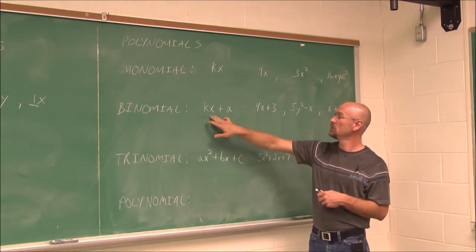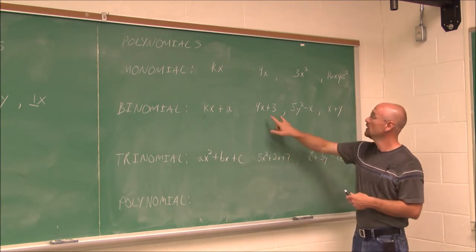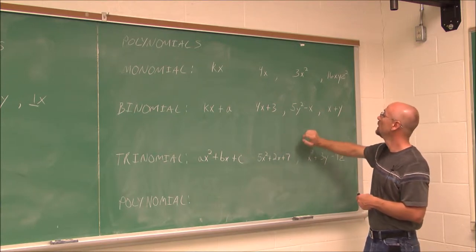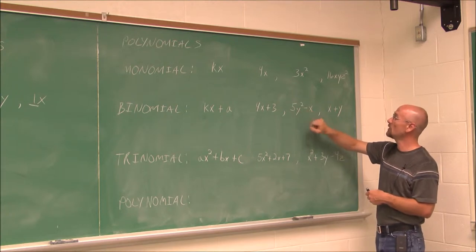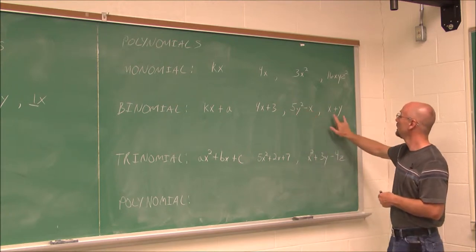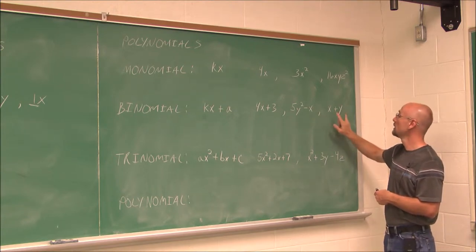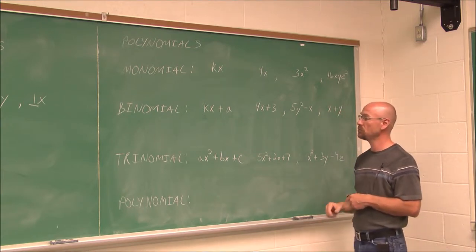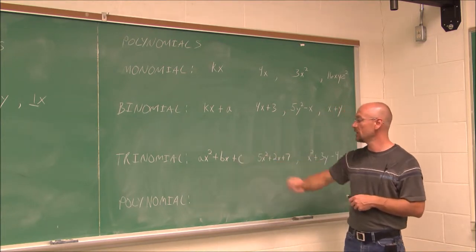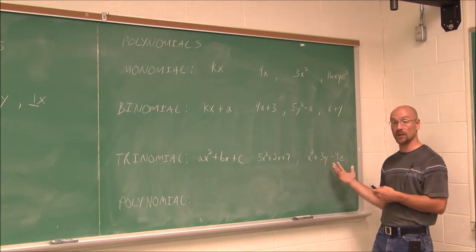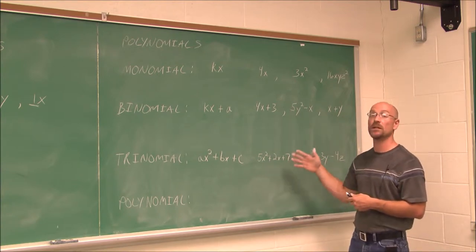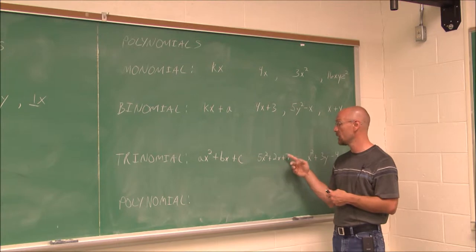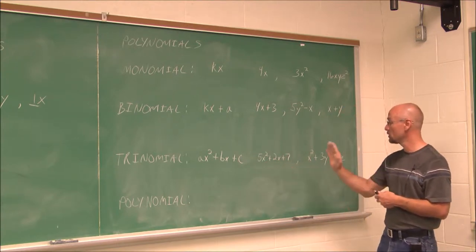For binomials, we have two terms separated by addition or subtraction. For example, 4x plus 3 — the term 4x and the constant 3. Also 5y squared minus x — two terms, a binomial. And x plus y — two different variable terms, a binomial. For trinomials, we have three terms, like 5x squared plus 2x plus 7, or x squared plus 3y minus 4z — three terms, trinomial.